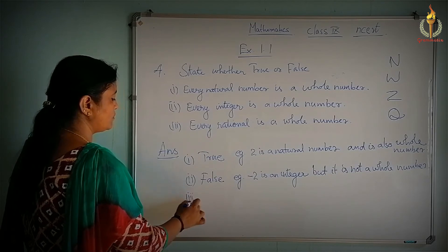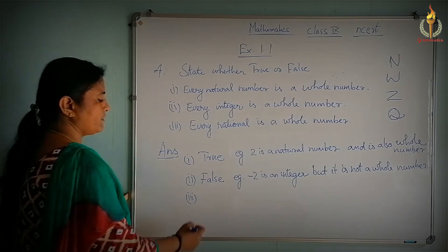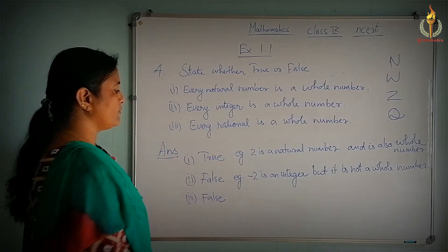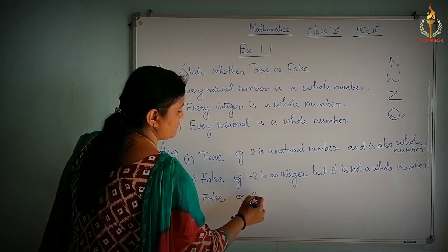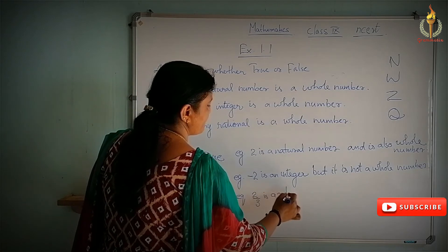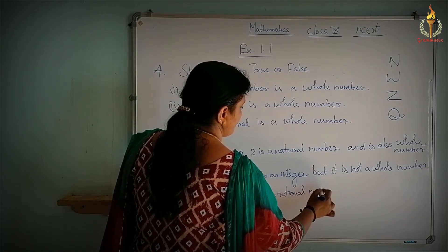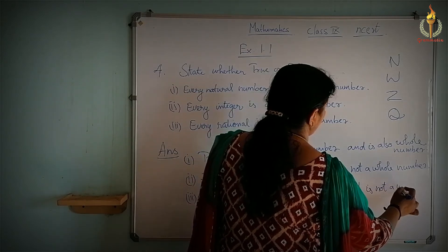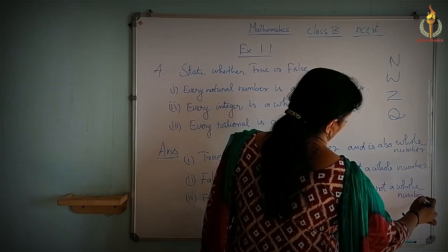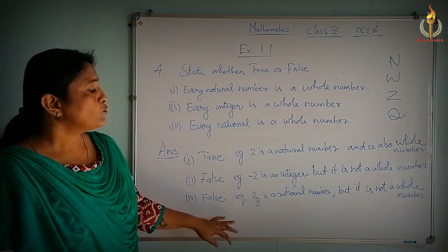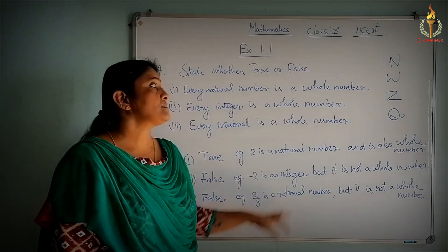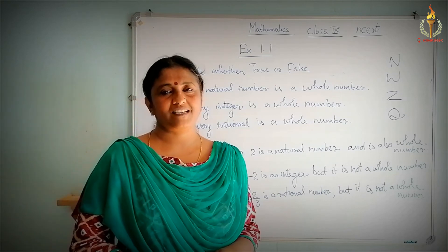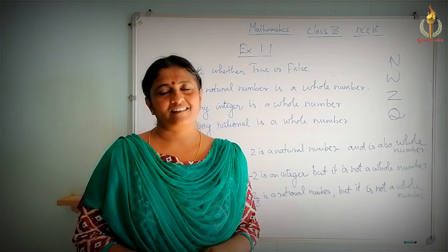The third one: every rational number is a whole number. Again, it is false, because rational numbers are of the form P by Q, and whole numbers are just whole numbers. For example, 2 by 3 is a rational number but it is not a whole number. So this is the answer for the fourth question. We did all four questions from exercise 1.1. I will be continuing with this chapter in the coming videos. Please do like, share and subscribe my channel and don't forget to hit the bell icon. Thank you and bye.